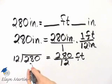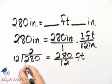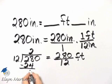Well how many 12s are in 28? That would be 2. 2 times 12 is 24. And when we subtract we have a remainder of 4. Bring down the 0.